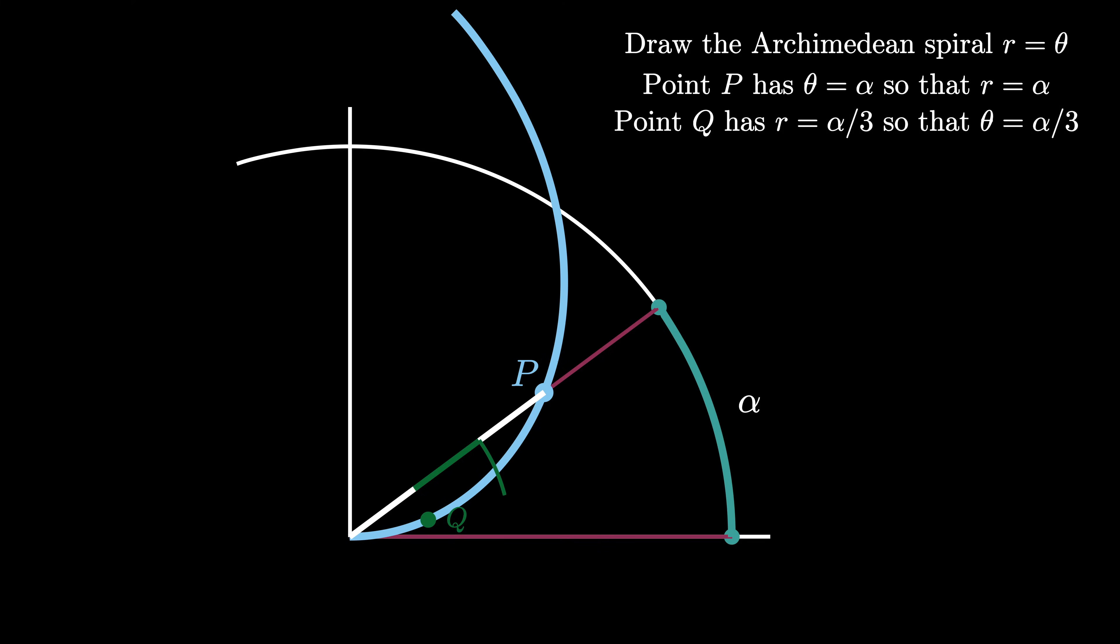Similarly we construct this arc of radius 2 alpha over 3 which intersects the Archimedean spiral at a point R. Because R has a radius of 2 alpha over 3 its angle is 2 alpha over 3 as well.